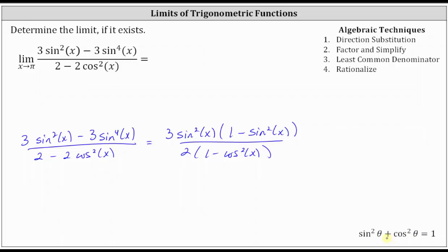And now using the identity shown below, where sine squared theta plus cosine squared theta equals one, we can substitute cosine squared x for one minus sine squared x, and we can substitute sine squared x for one minus cosine squared x. Let's perform those two substitutions.